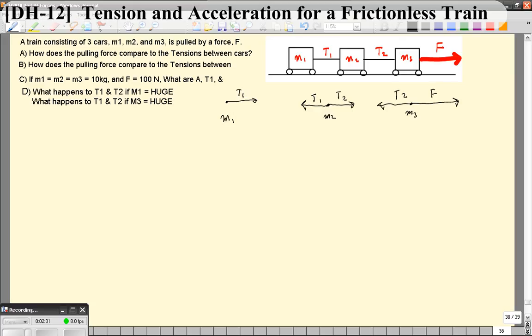So when we use Newton's second law for the first object, sum of the forces on object one is going to be equal to tension one. That's the only force in the horizontal direction. That's going to equal M1A.